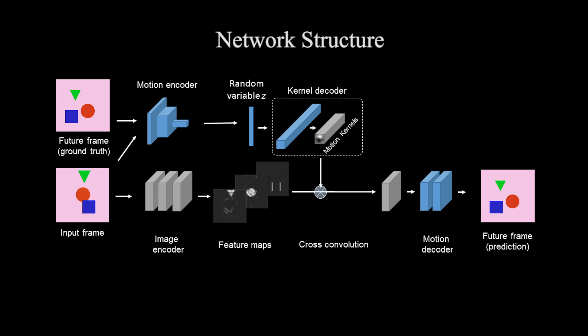At training time, we add a motion encoder to learn the random variable z from two consecutive input frames. We can then train the network end-to-end.